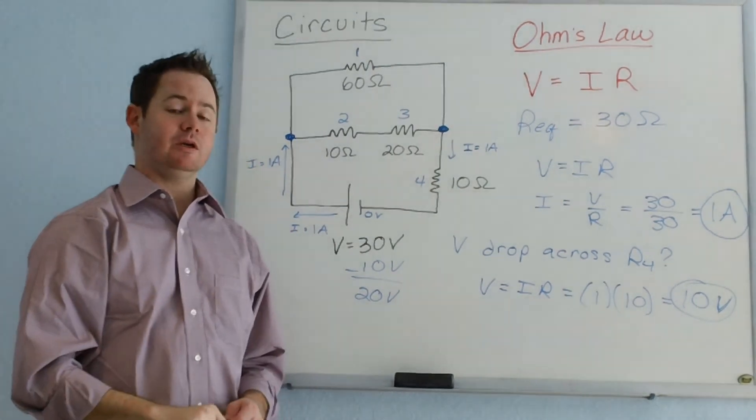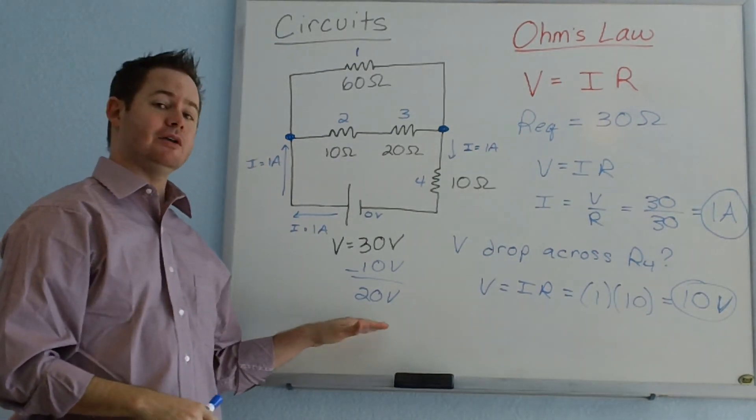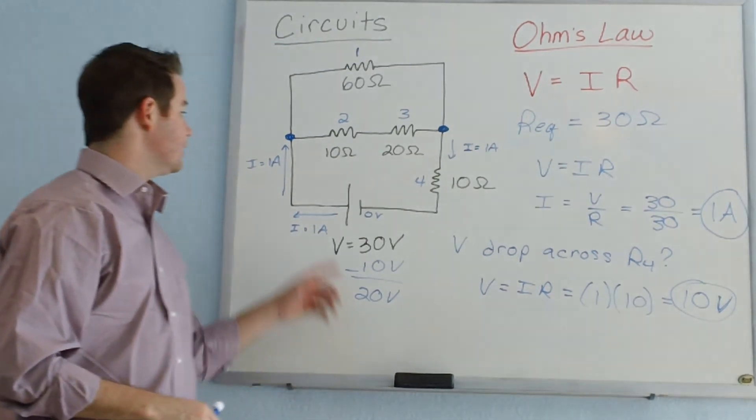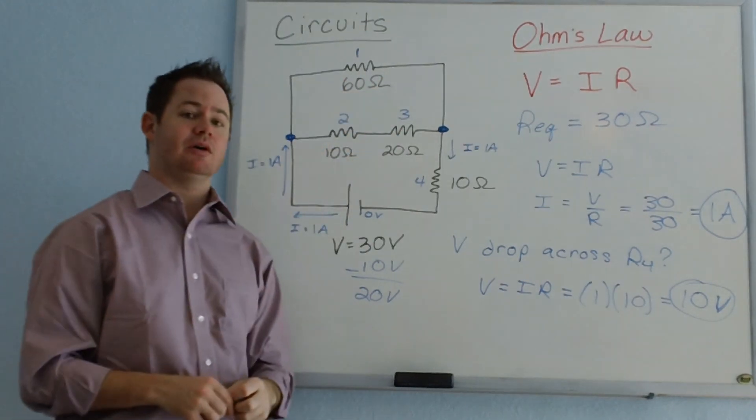And in circuits part 3, our next video, we will see exactly how we can use those values for voltage drop to calculate the current that's passing through each of these resistors that we have in the top part of our loop.